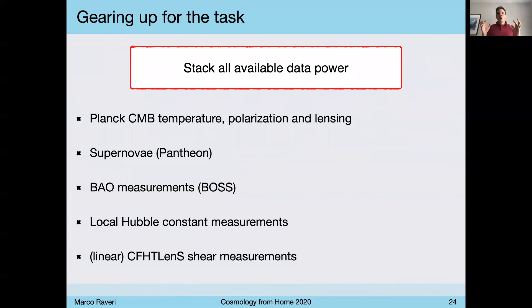Once we have all the tools we need, we need to stack all the available data power, because to do this exercise, we just want to have good data. So in this particular case, I was using Planck temperature measurements, polarization and lensing reconstruction data, distance measurements from Pantheon supernovae, BAO measurements, local measurements of the Hubble constant, and some information from large-scale structure surveys from CFHT lensing. And once we have all these ingredients, the tools, the data, and some prescription for some very mild theoretical guidance, we can go through the exercise, and this is the result.